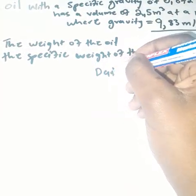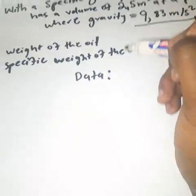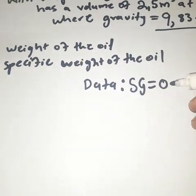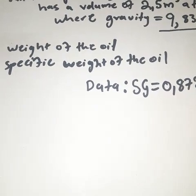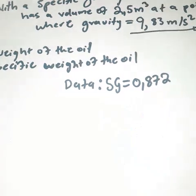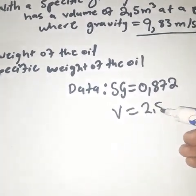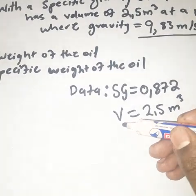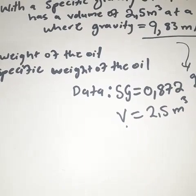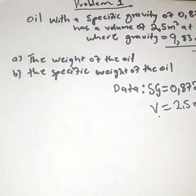Let's list our given data here. We are given specific gravity SG = 0.872. We are also given volume V = 2.5 cubic meters, and we are given gravity g = 9.83 meters per second squared. Those are our three given values.